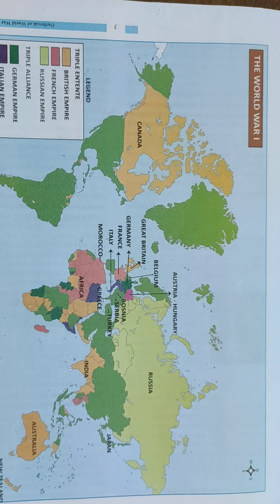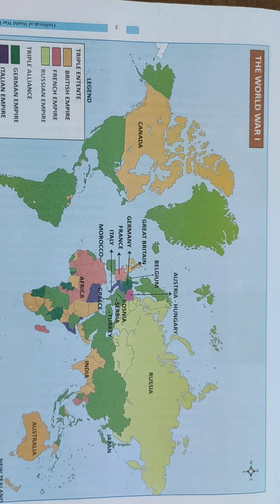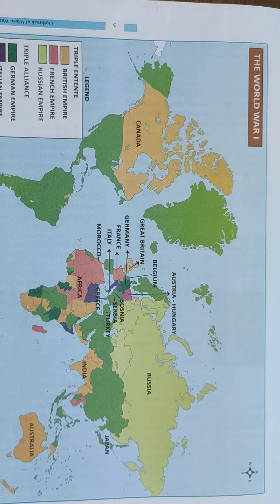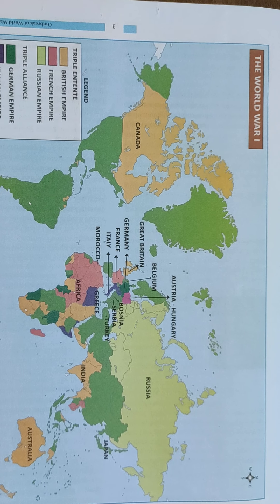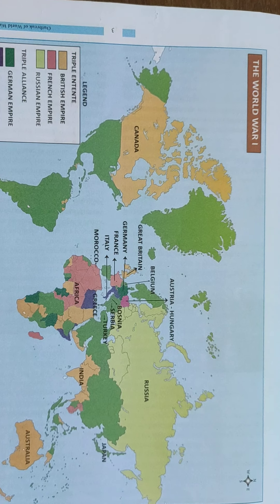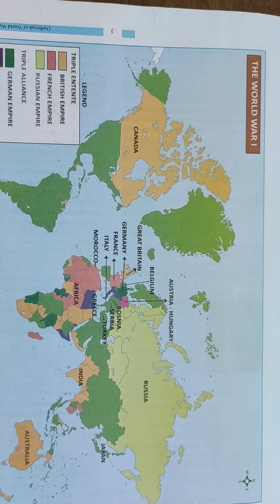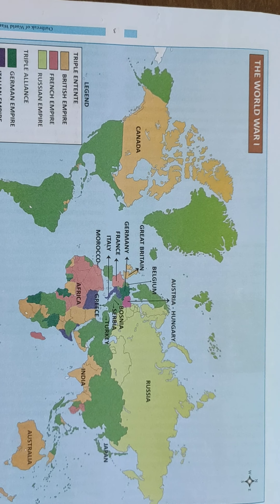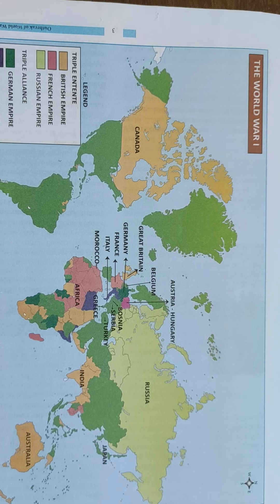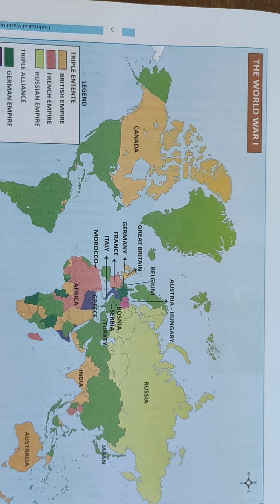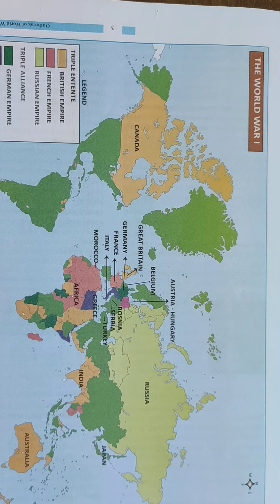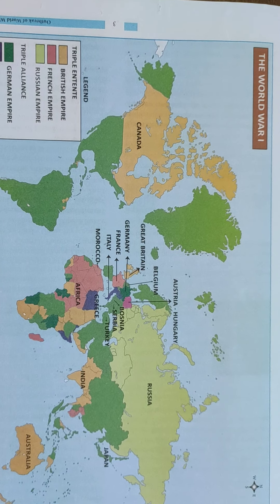These are the main countries or main continents. Here you can see Germany. There is Belgium — actually it is not Belgium, it is Norway and Sweden. The arrow mark is given for Belgium so you can see it here.